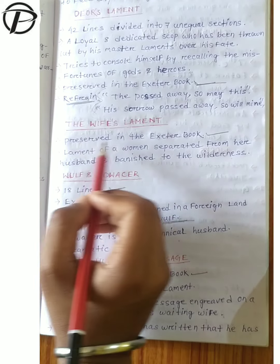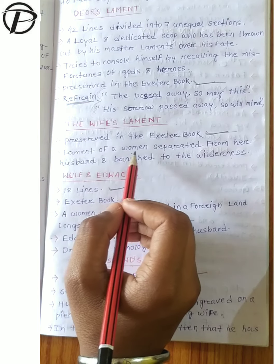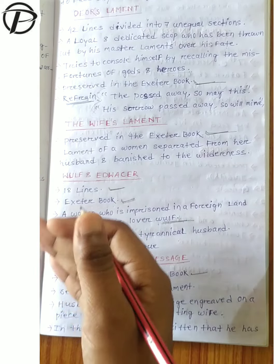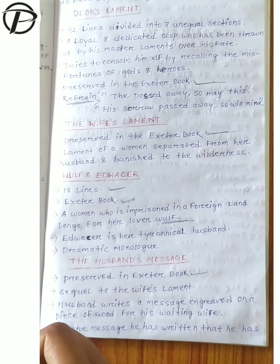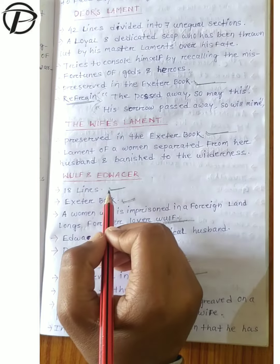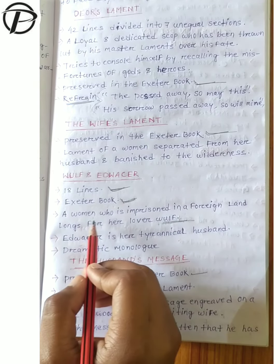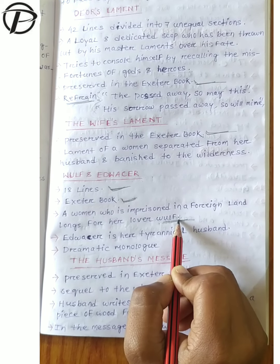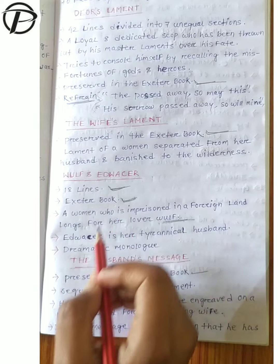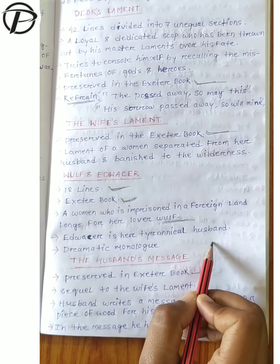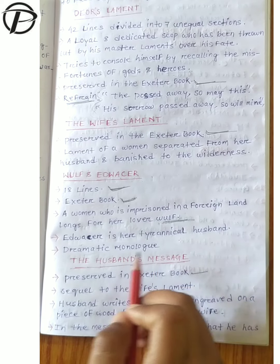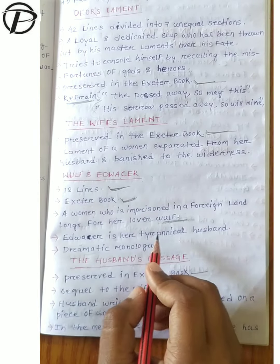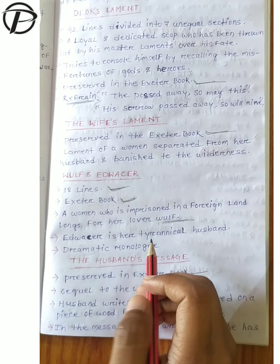Next is the Wife's Lament, preserved in the Exeter Book. It is the lamentation of a woman separated from her husband and banished to the wilderness. Then Wulf and Eadwacer is of 18 lines, also preserved in the Exeter Book. A woman who is imprisoned in a foreign land longs for her lover Wulf, while Eadwacer is her tyrannical husband. This is a dramatic monologue narrated entirely by the woman.